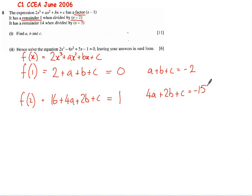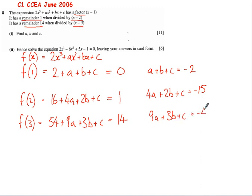And finally, it has a remainder of 14 when divided by x - 3. So when we put that in, f(3) equals 3³ is 27 times 2 is 54. 3² is 9, so it's 9a. 3 times b is 3b plus c equals, well we know the remainder this time is 14. And just reorganizing that, we get 9a + 3b + c equals -40.